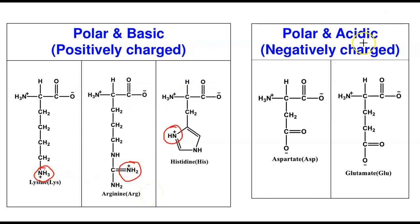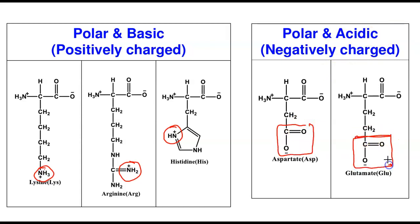The polar acidic, or negatively charged, group includes aspartate and glutamate. Both have an extra carboxylic group that is ionized to a negative charge at physiological pH. The difference between them is that glutamate is longer, with an extra CH₂, whereas aspartate has only one CH₂ before the carboxylic group.